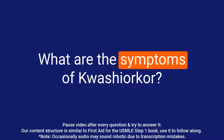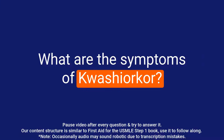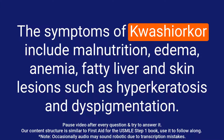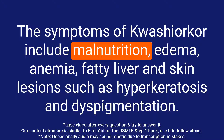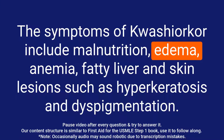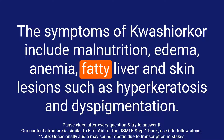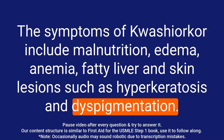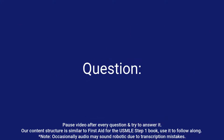Question: What are the symptoms of kwashiorkor? Answer: The symptoms of kwashiorkor include malnutrition, edema, anemia, fatty liver, and skin lesions such as hyperkeratosis and dyspigmentation.